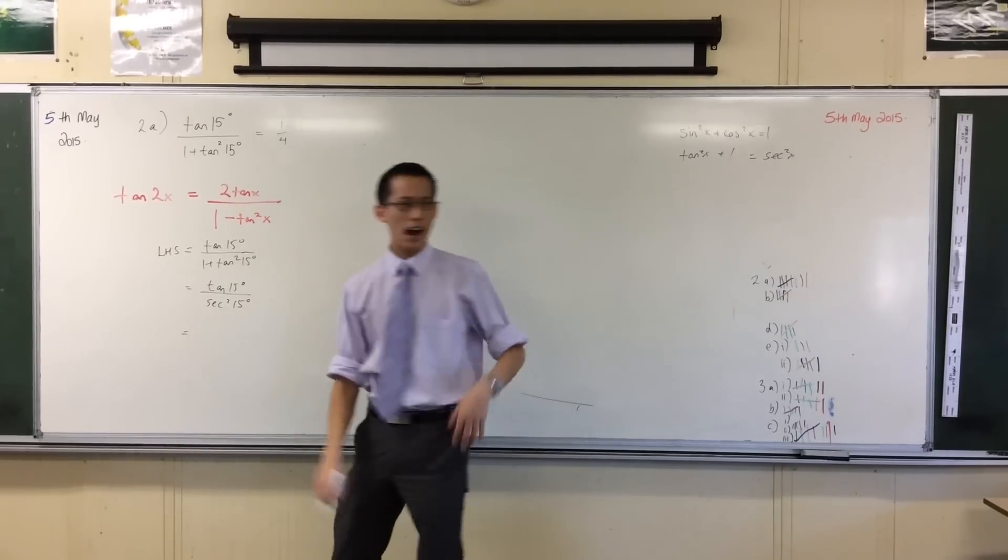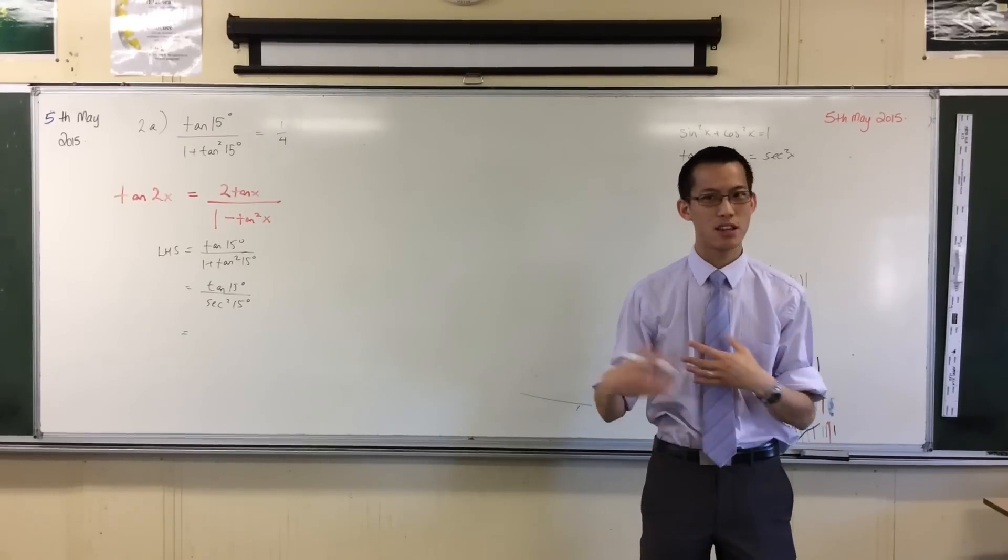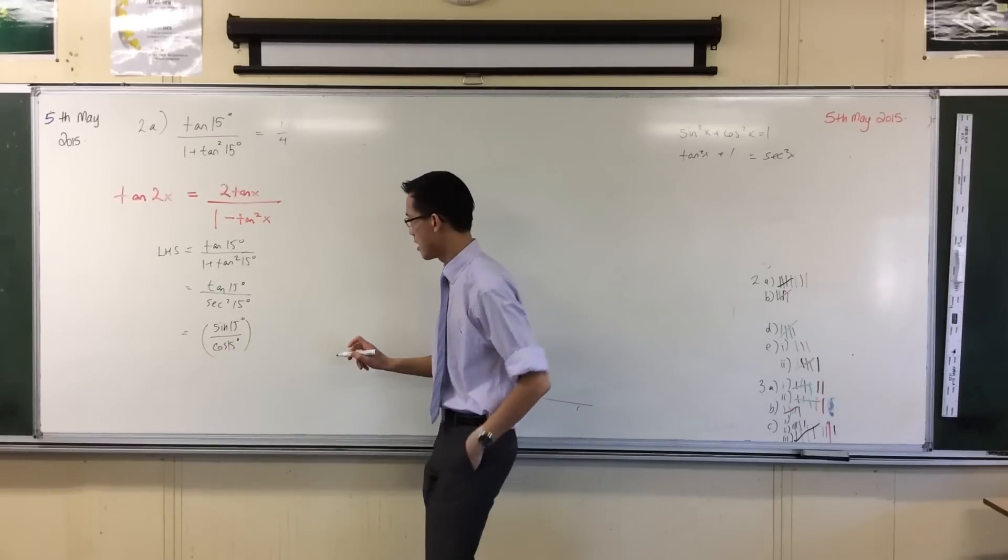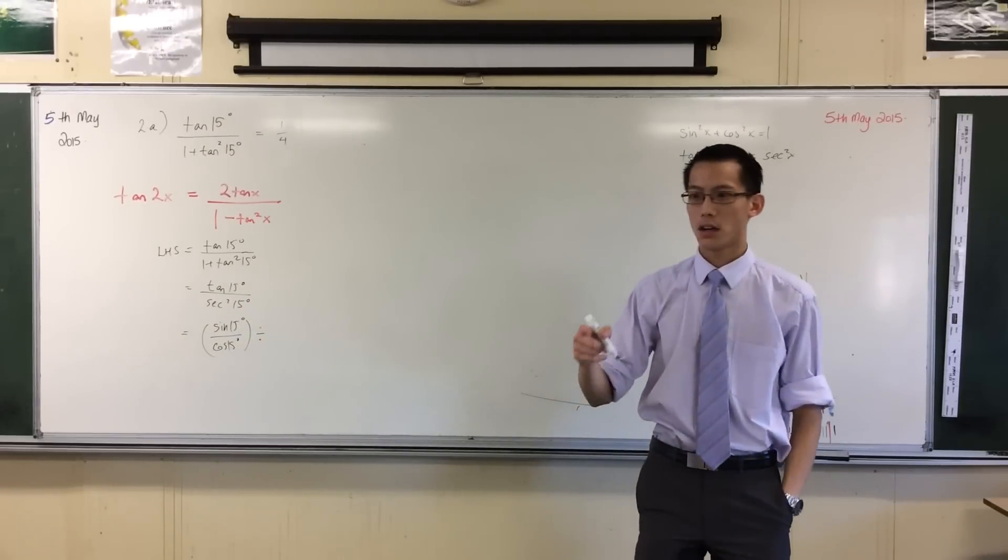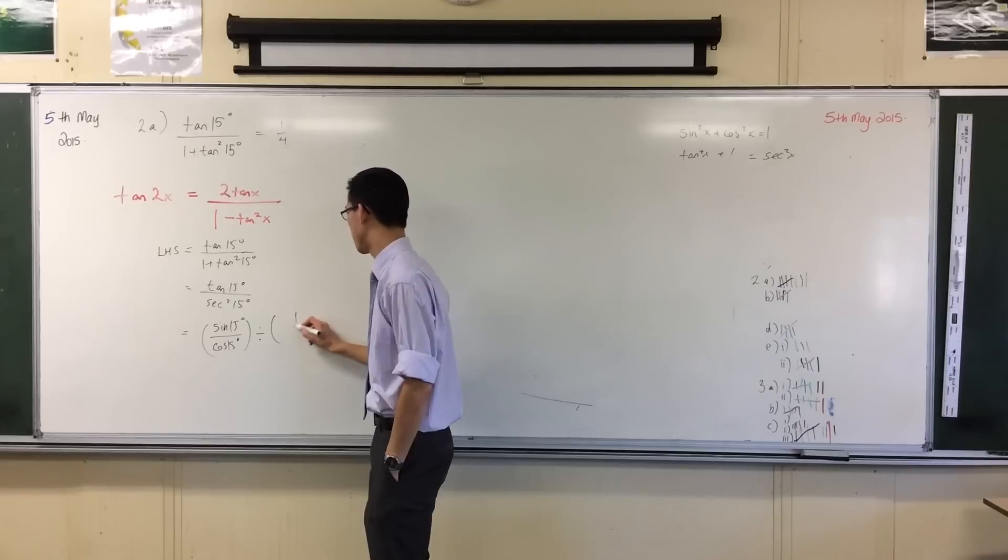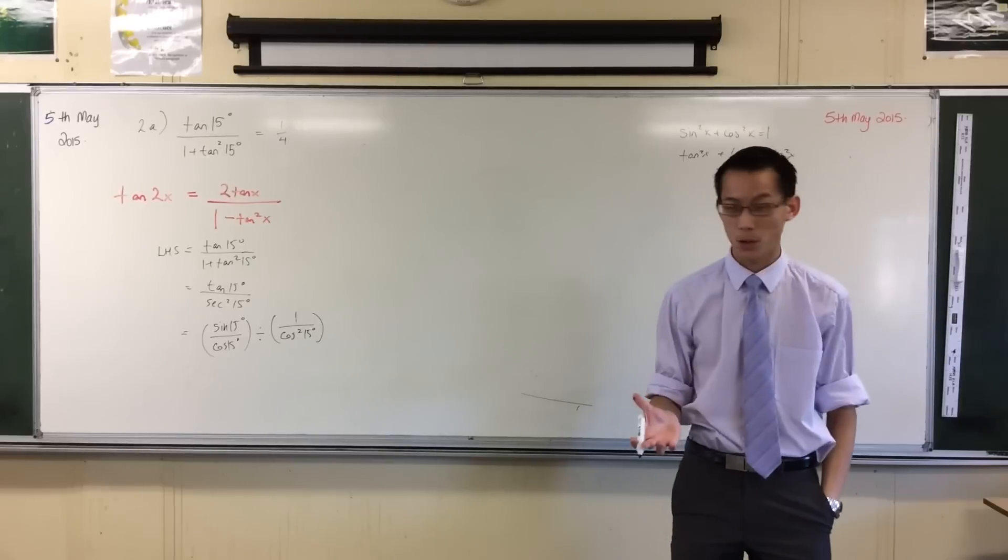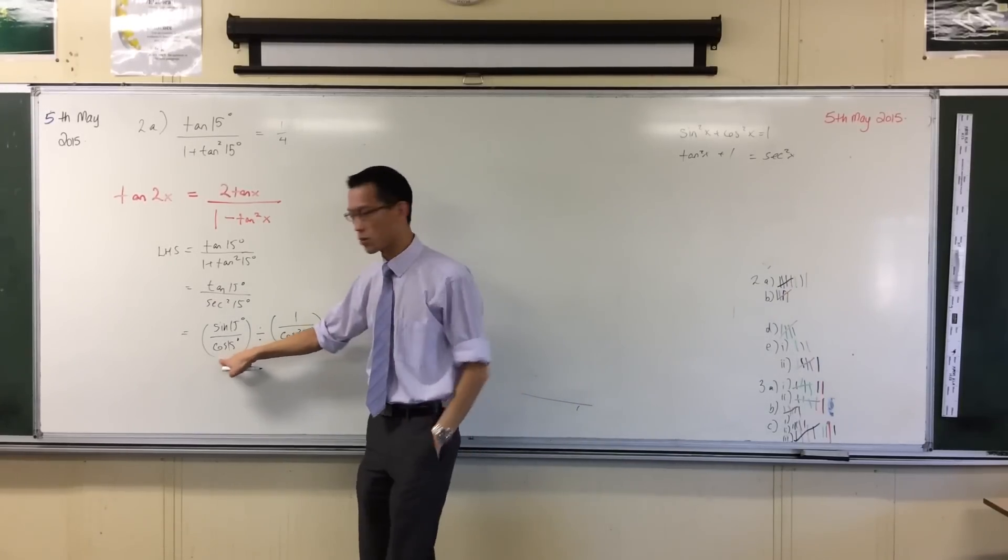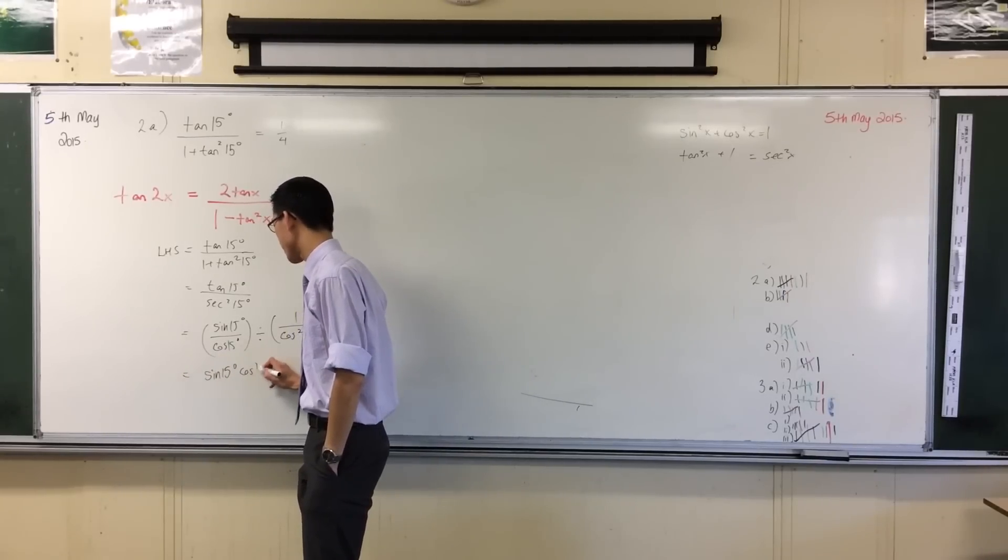Where am I going to go from here? I've got tan at the top, I've got sec squared on the bottom. Now, both of those are identities in terms of sine and cos, so I'm going to rewrite it into those terms. So I've got sine over cos, that's my numerator, and I'm dividing by this thing over here, which is 1 over cos squared. So being that I'm dividing by a reciprocal, what I'm really doing is multiplying by what that denominator is, so I'm multiplying by cos squared, which is why one of these will cancel, and I'll just be left with sine 15 cos 15.